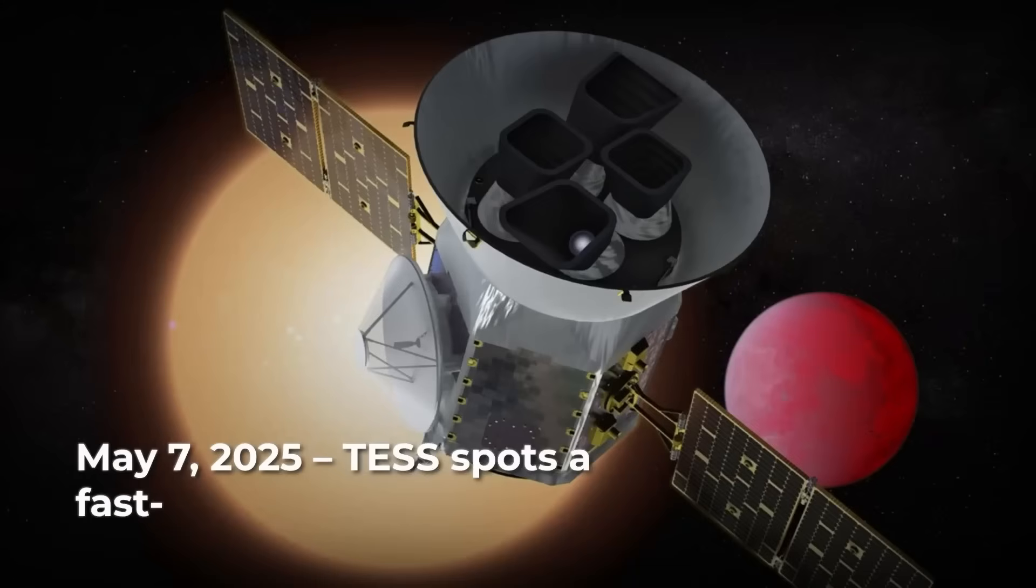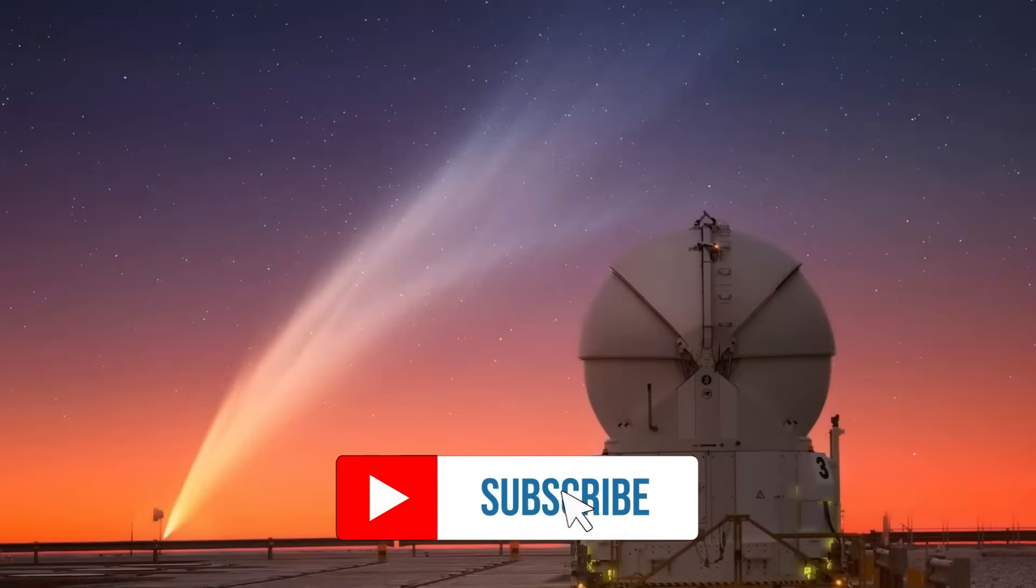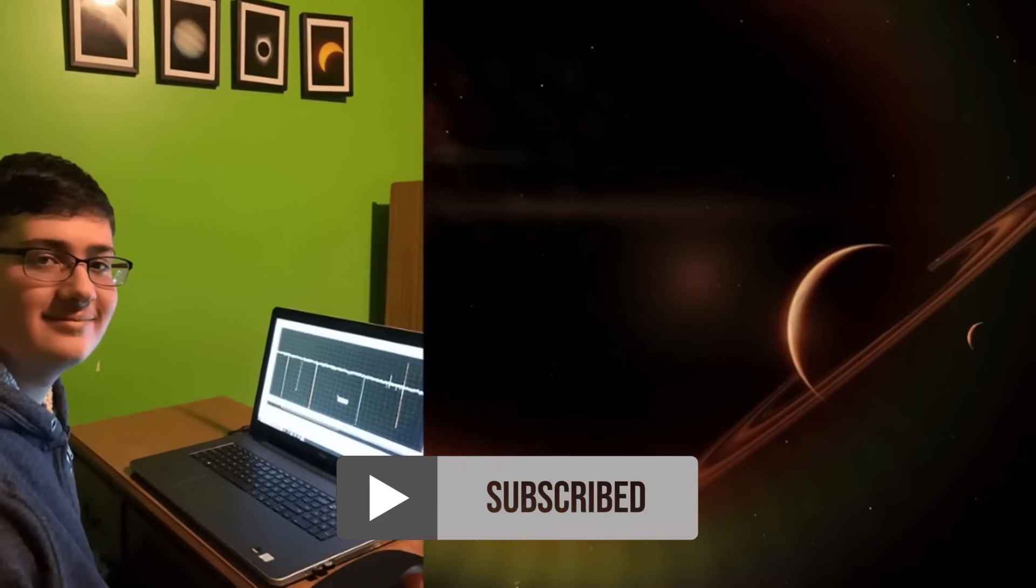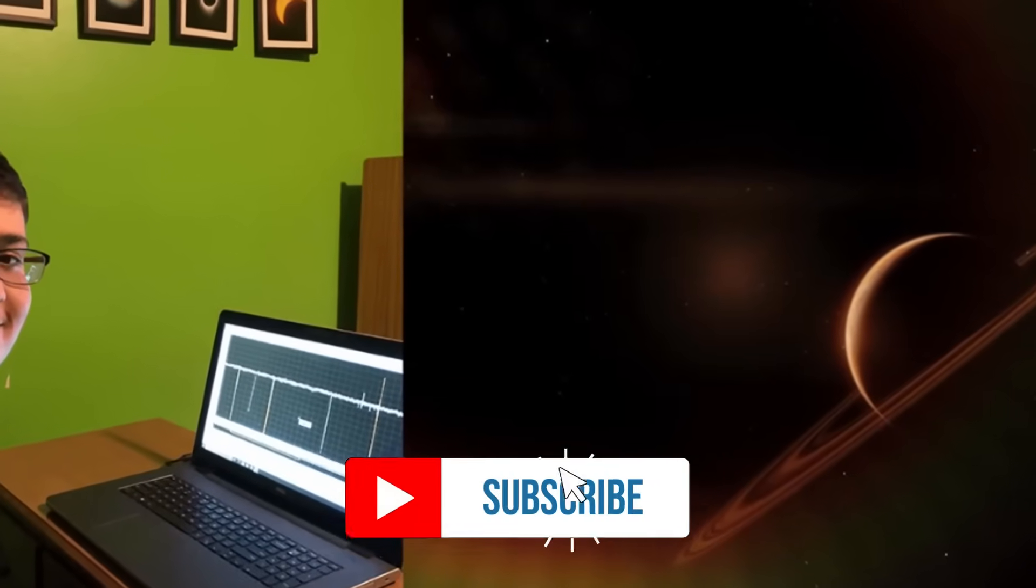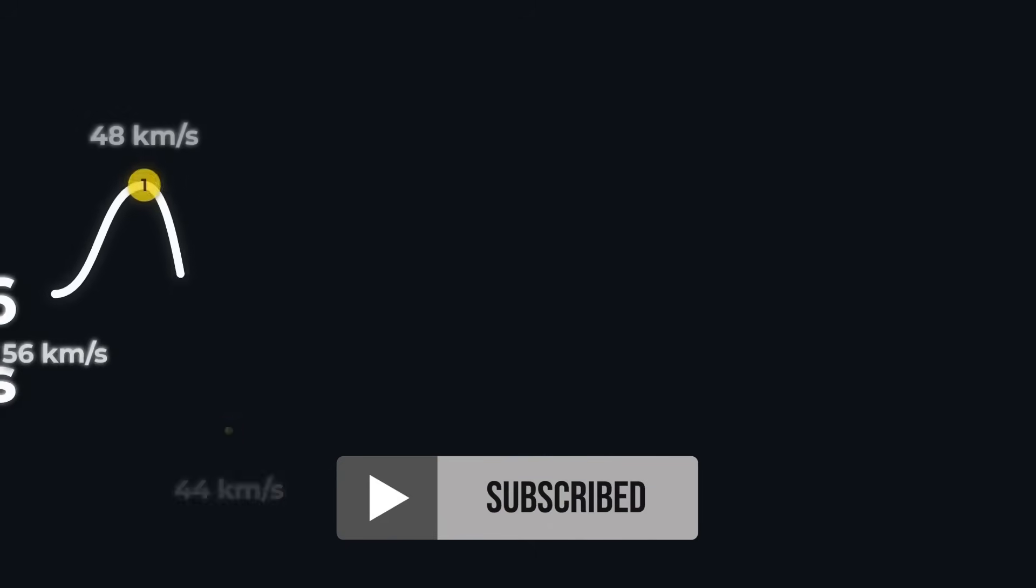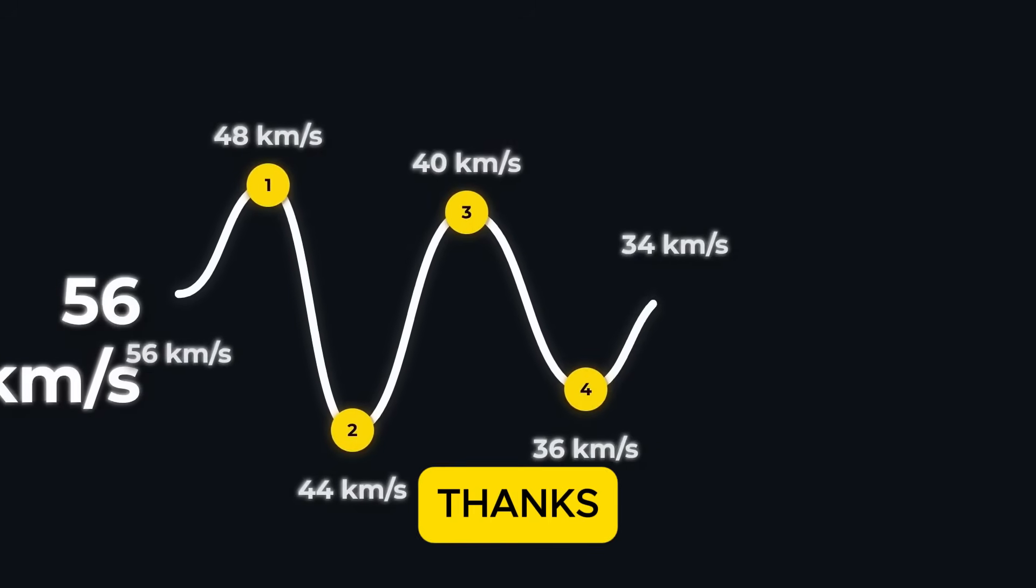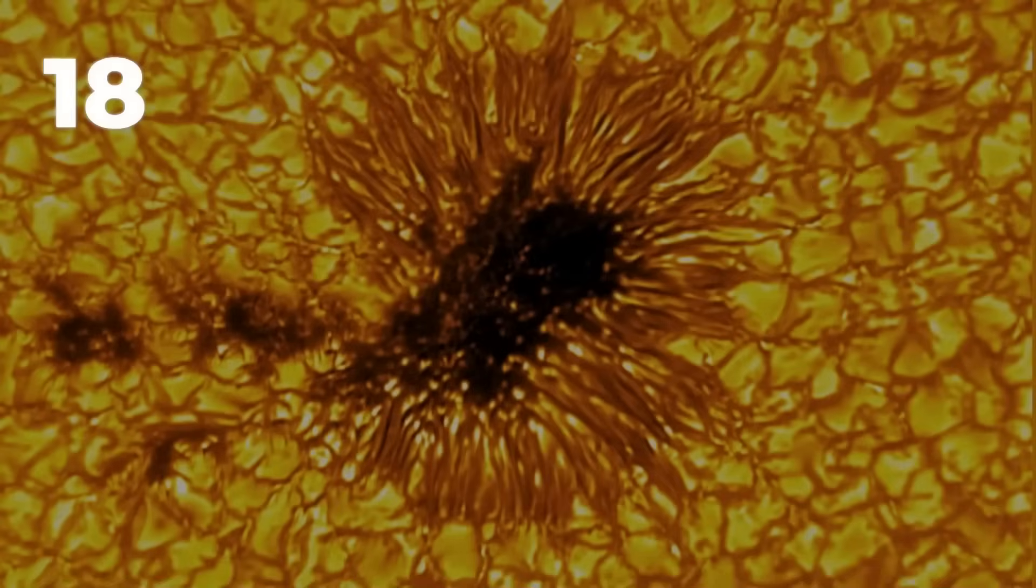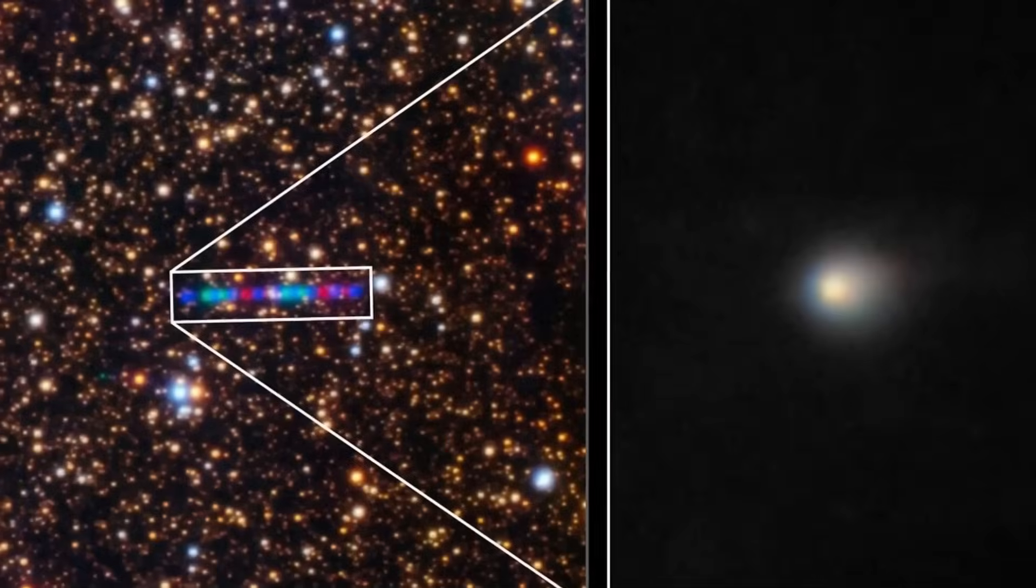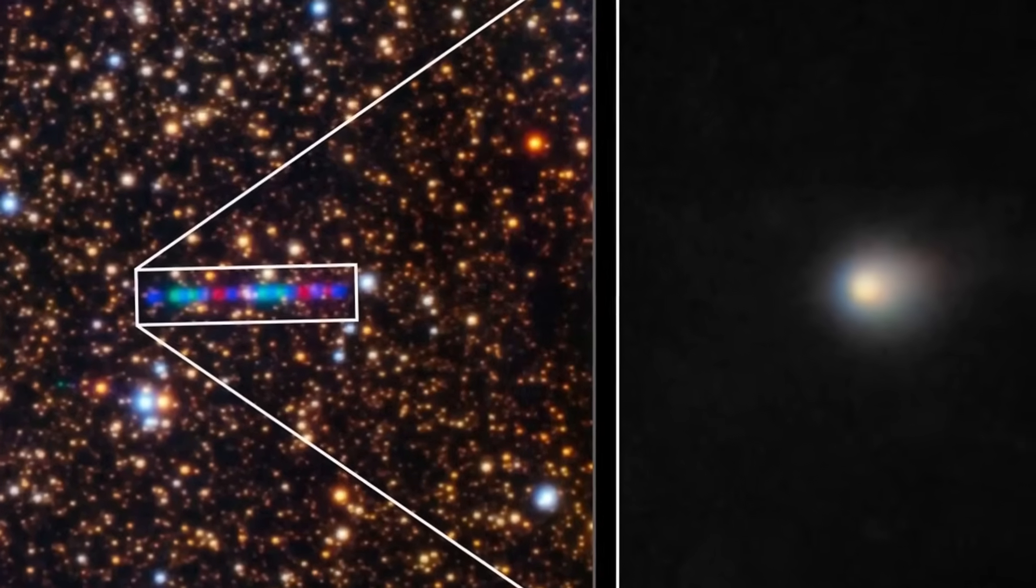And then, there's the motion problem. If Atlas were losing mass through jets of gas and dust, its orbit should be shifting dramatically. Instead, it stays locked in a nearly perfect gravitational path. The only natural way to explain this would be for Atlas to be so massive that outgassing barely moves it. But measurements of its brightness and coma size show that it isn't nearly large enough to account for that kind of stability.